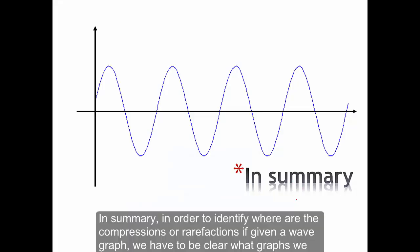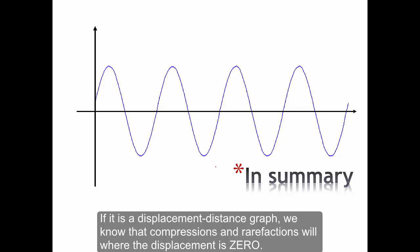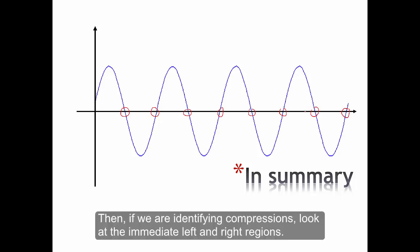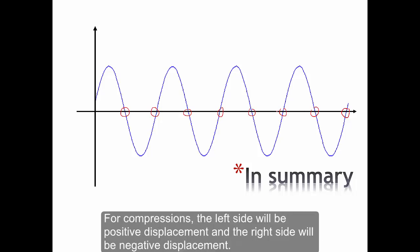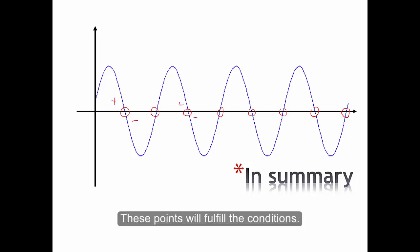In summary, to identify where the compression or rarefaction is given a wave graph, first determine which type of graph you are looking at. If it is a displacement-distance graph, compression and rarefaction will both be where the displacement is zero. To identify compression specifically, look at the immediate left and right regions: the left side will have positive displacement and the right side will have negative displacement, as indicated on the graph.